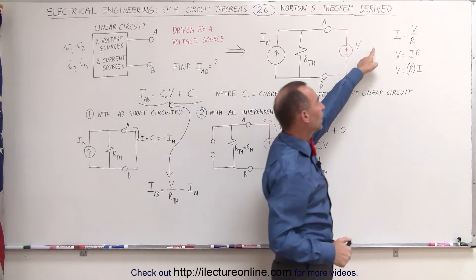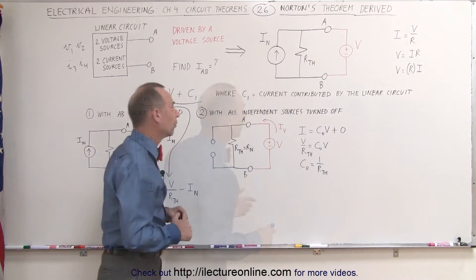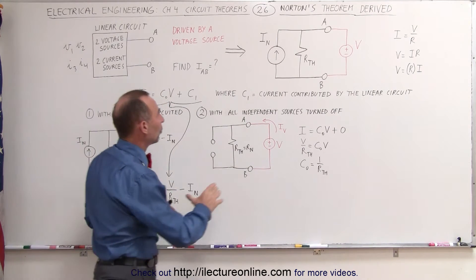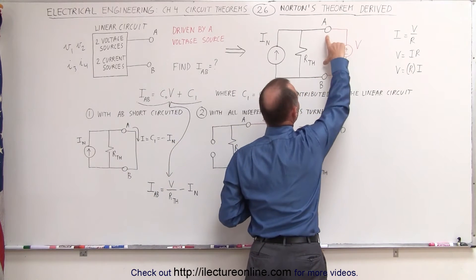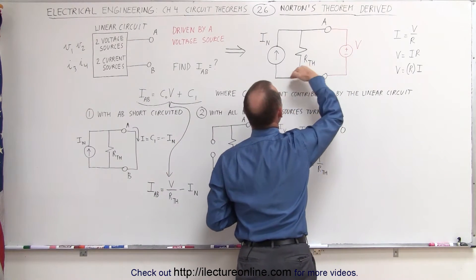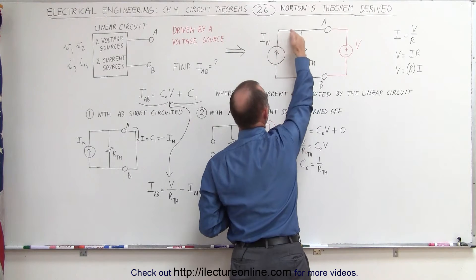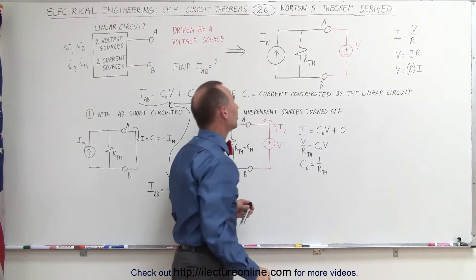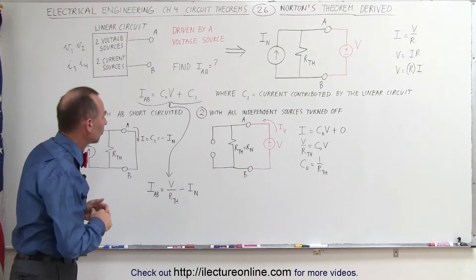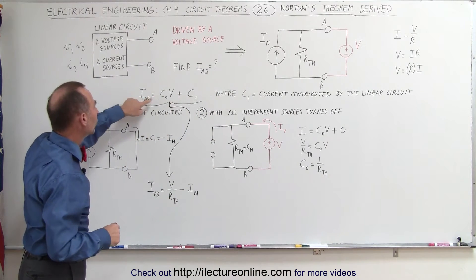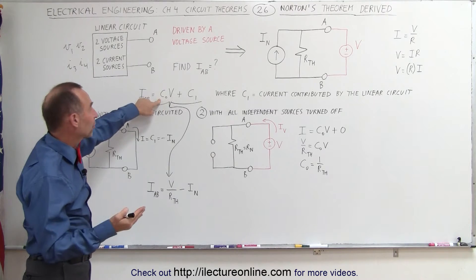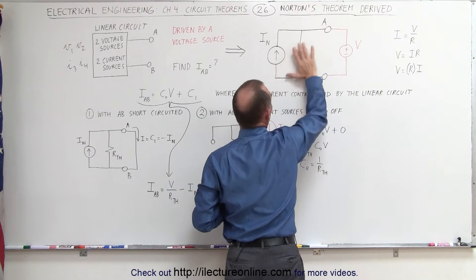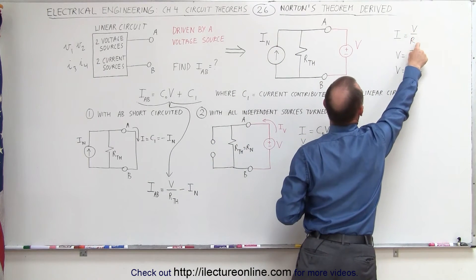Remember Ohm's law where I equals V over R and its derivative equations. We start off with the assumption that the current, once we put a voltage source between A and B, is going to be driven by the current of the Norton equivalent circuit and the current driven by this voltage source relative to the Thevenin or Norton resistance. The current from A to B is going to be some factor of the voltage — there's going to be some equivalent resistance, and we know that the current is V over R.